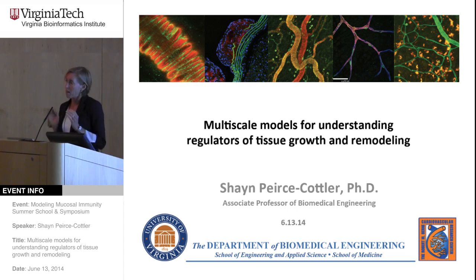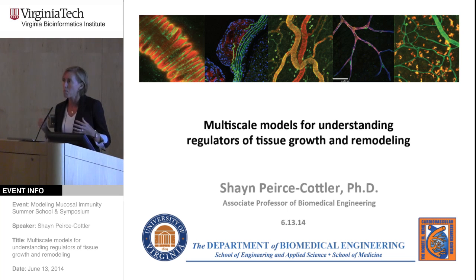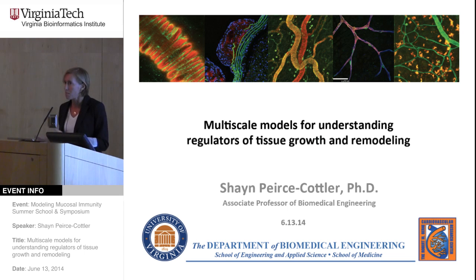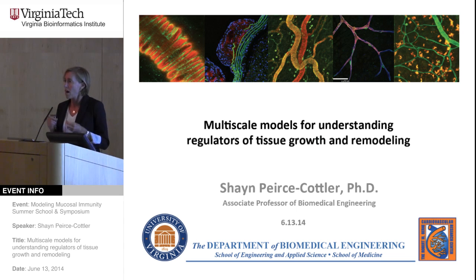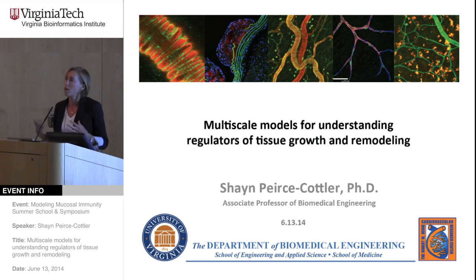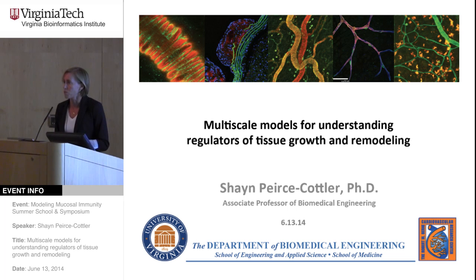I'm going to be talking about both small vessel remodeling — the microcirculation — how patterns of networks of blood vessels at the smallest scale, 10, 20, 30 microns, adapt and remodel and grow, principally during development. About halfway through, I'm going to switch to talking about large blood vessels, remodeling of coronary arteries, for example, enlargement due to sustained pressure increases that occur during hypertension.